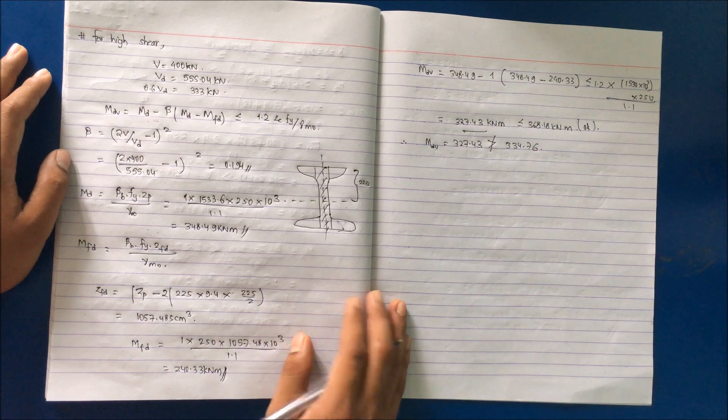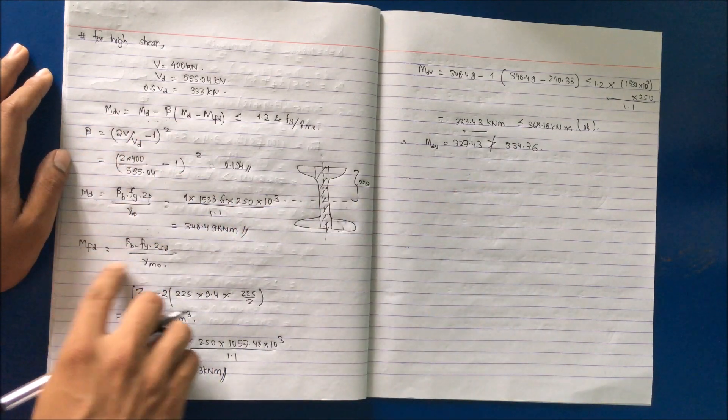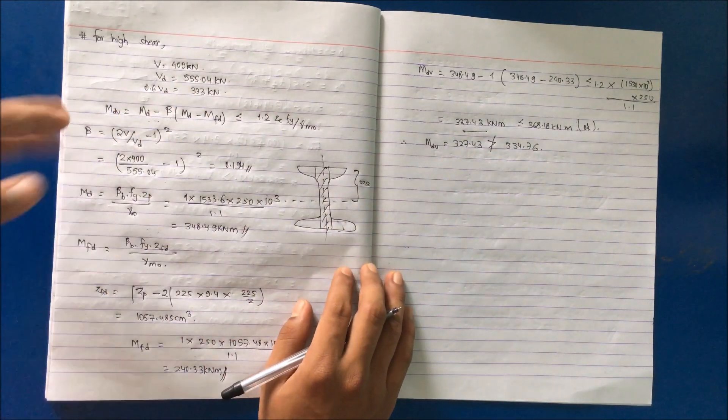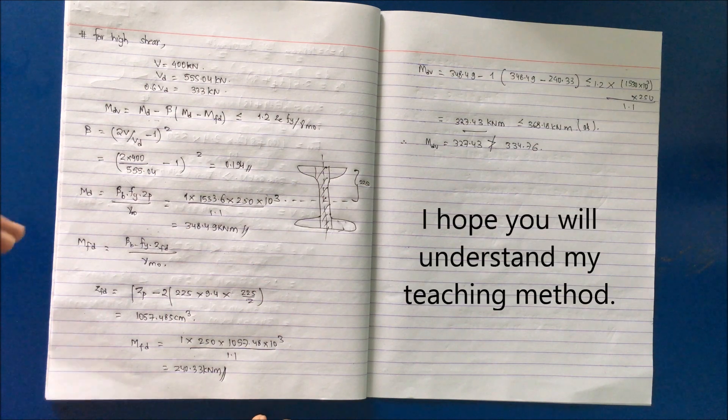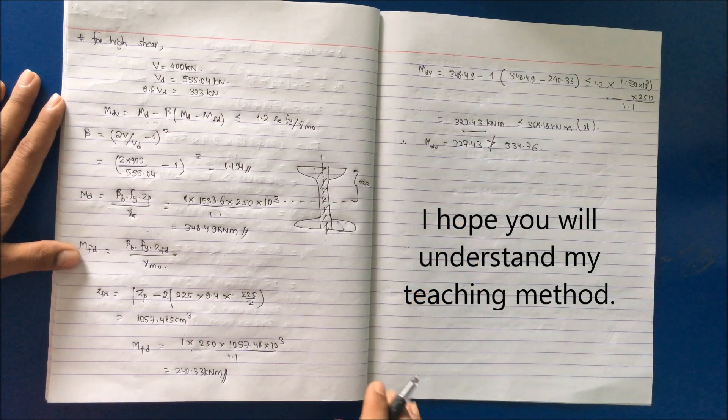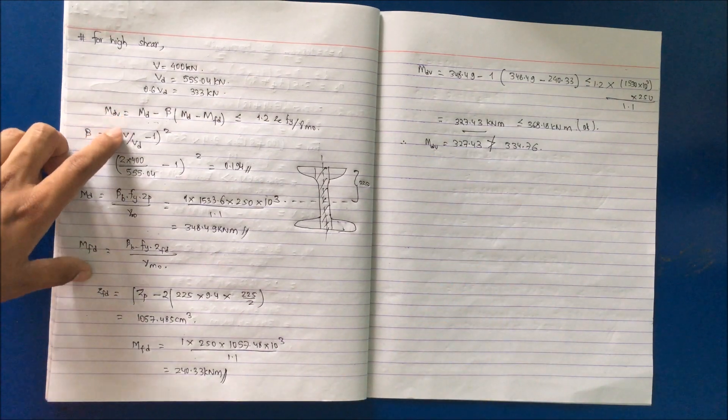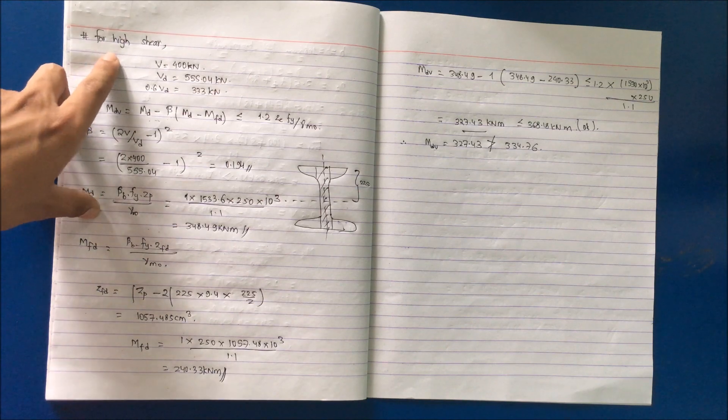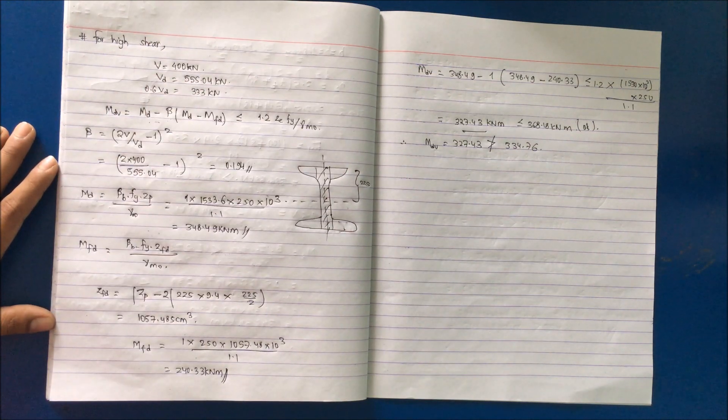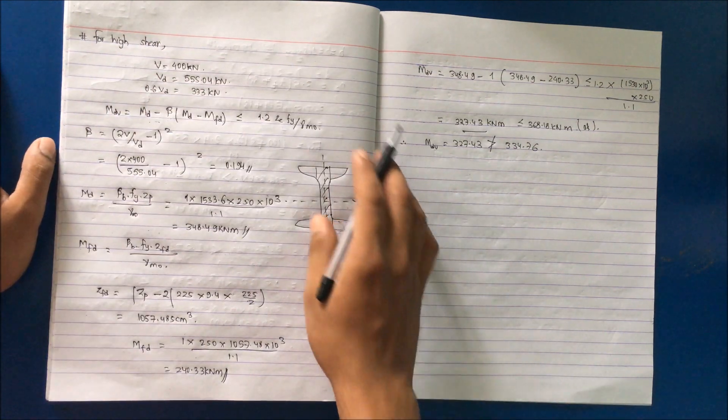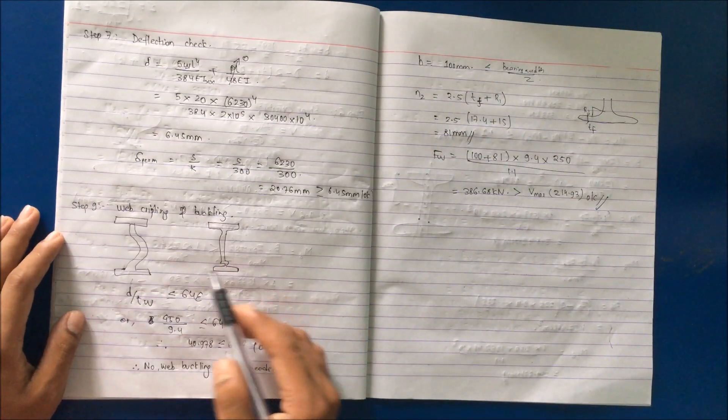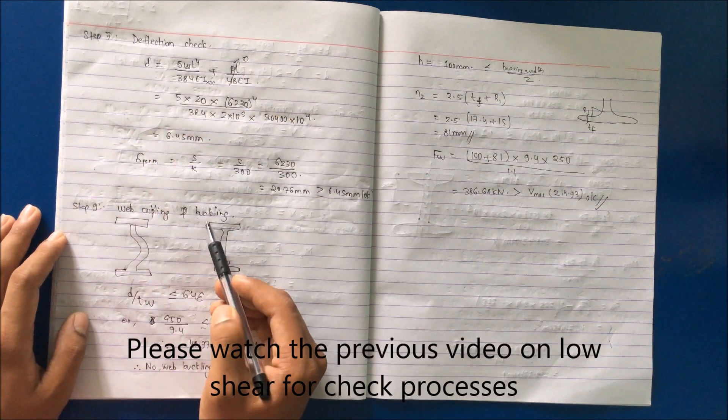I wanted to provide the method of how to calculate for the high shear case. Now you have to go through different sections and choose a different section so you can overcome this design strength value. I hope you have understood the major concept of this video: how to tackle the high shear case, what has to be calculated, and how to determine the design value. After this, the design procedure is the same as the previous video: we have to calculate for deflection check, web crippling, and buckling check.